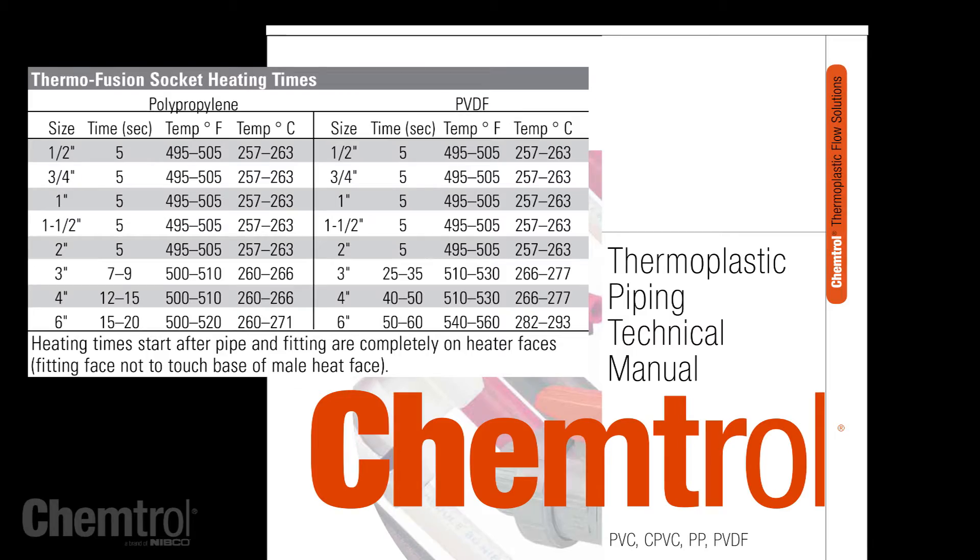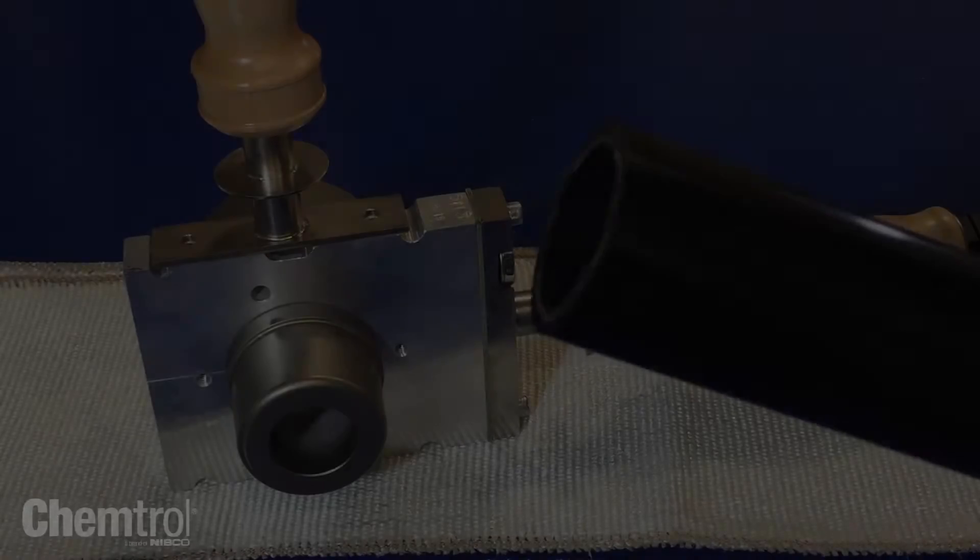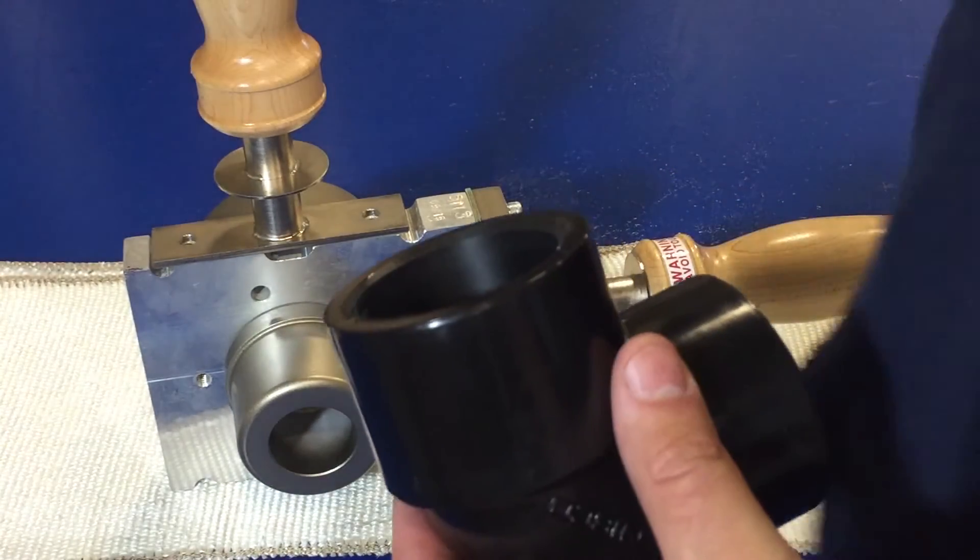Set the temperature on the handheld tool and set the appropriate time in the timer. Use a clean dry rag to wipe the exterior of the pipe and the interior of the fitting.